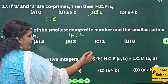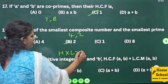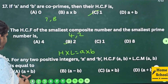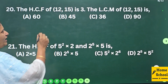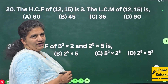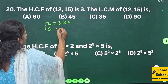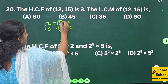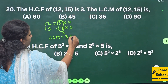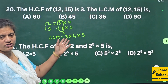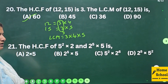Question 20: The HCF of 12 and 15 is 3; the LCM of 12 and 15 is what? 12 can be written as 3×4 and 15 as 3×5. HCF is already given as 3. LCM = 3 × 4 × 5 = 60. Your answer is option A: 60.